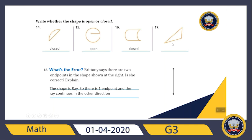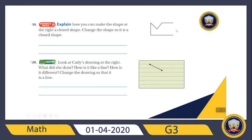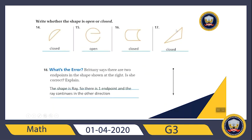The last one, number 17 — it's a triangle. Is there any open part? No, so it's a closed shape.